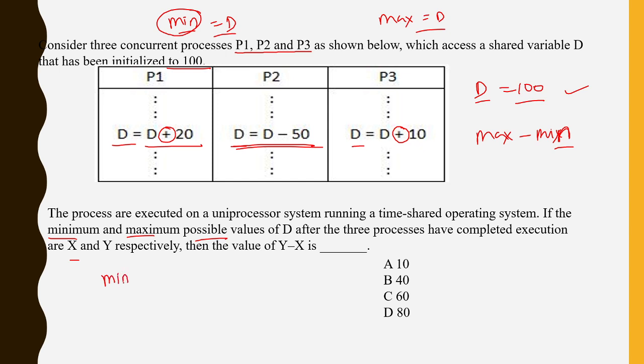So definitely my minimum possible value will be: it was 100, and when P2 is reading the value then it will be 100, after that minus 50, so that can be 50. So 100 minus 50 is 50, that is my minimum possible value.